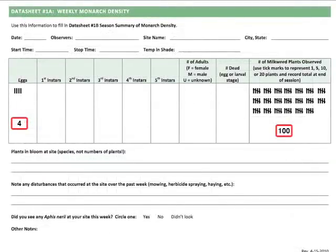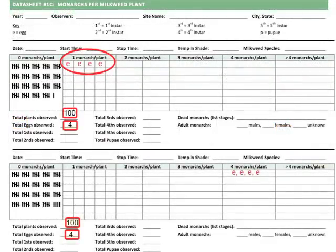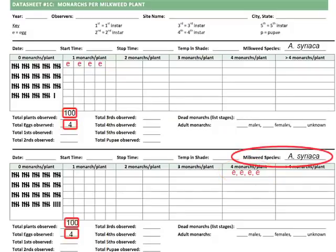On the simpler datasheets, you'd report seeing, for example, four eggs on a total of 100 plants observed. With datasheet 1C, you can report if these eggs were on four separate plants or if they were all on the same plant. This information will help us understand potential impacts of crowding on monarch survival. Because you will also be recording the milkweed species, we'll be able to assess how female monarchs make egg-laying decisions when they have more than one milkweed species growing in a single site.